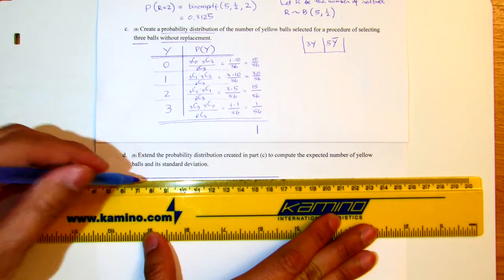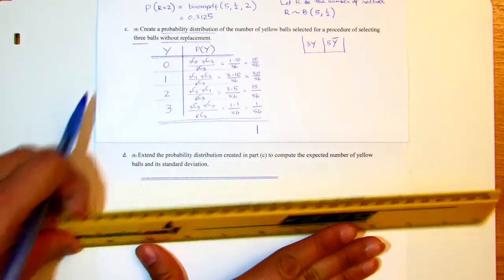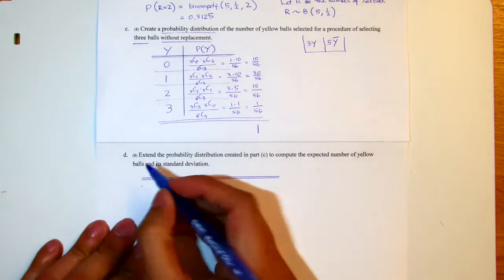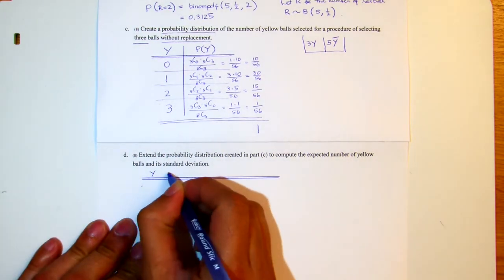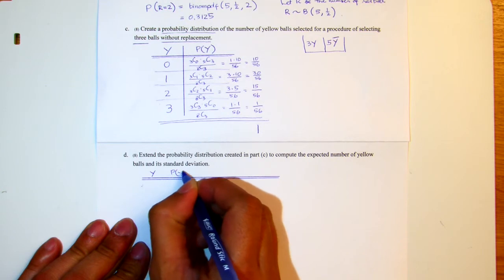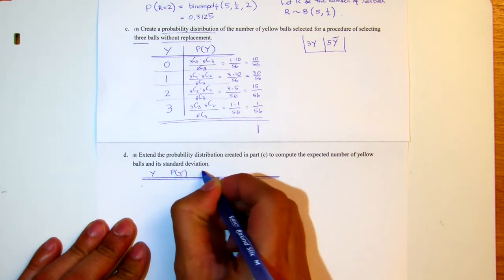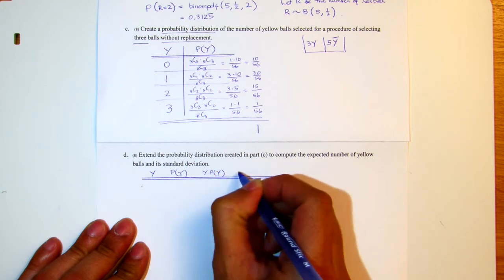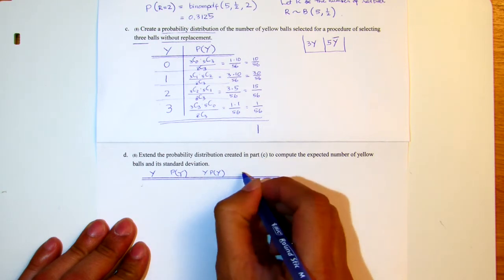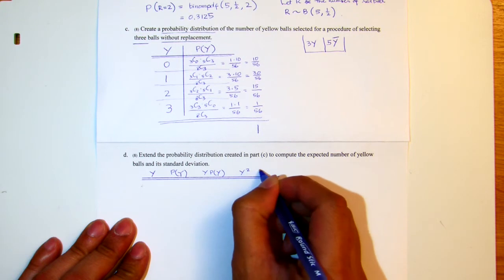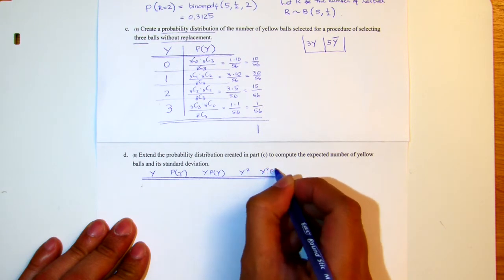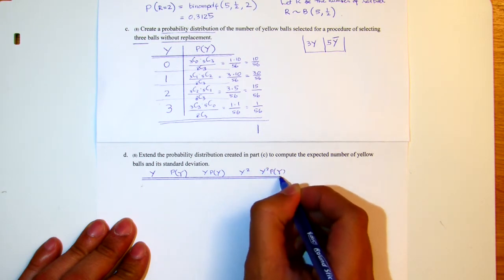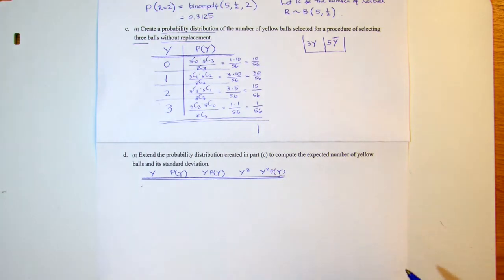The first column will be for Y, the second column for the probability of Y, the third column is Y times probability of Y. That's the first extension. The second extension will be Y squared and Y squared probability of Y.